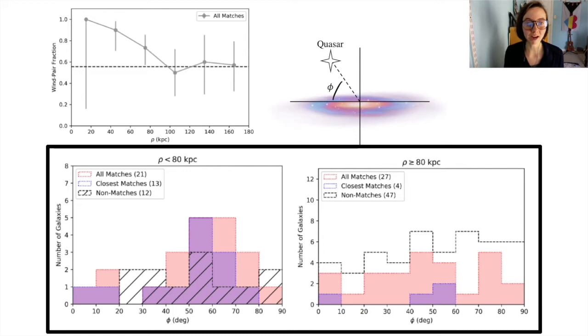At impact parameters less than 80 kiloparsecs, shown in the left histogram, the distribution of our sample peaks near 60 degrees, which agrees with Schroeder et al. 2019's findings and is consistent with Nelson et al. 2019's analysis of the illustrious TNG simulation.